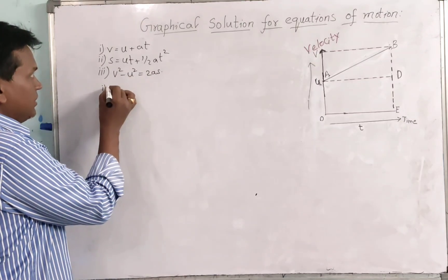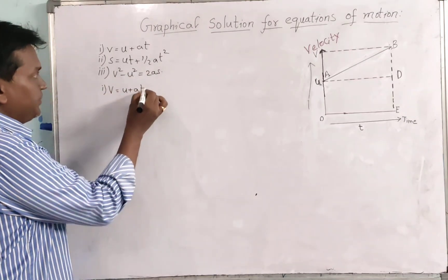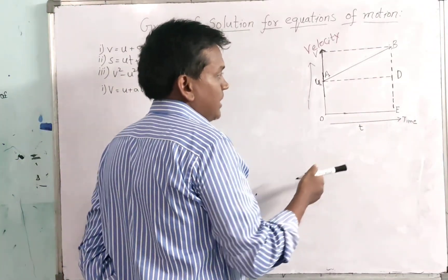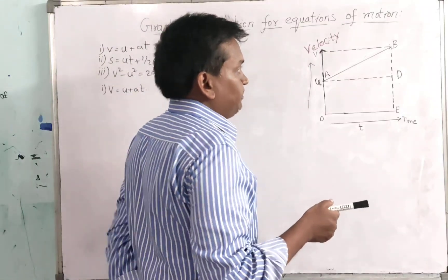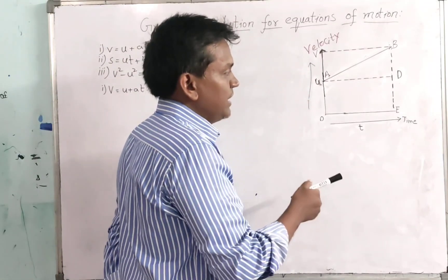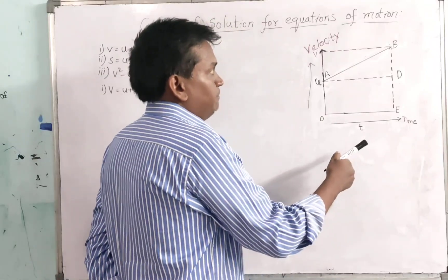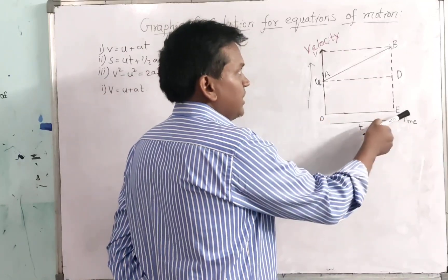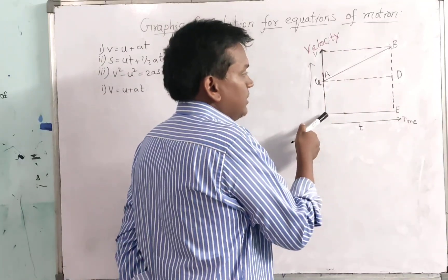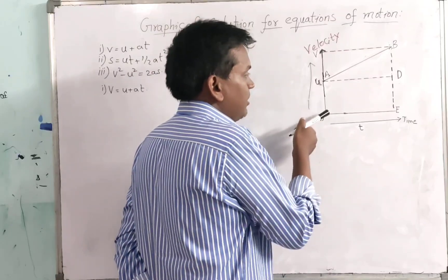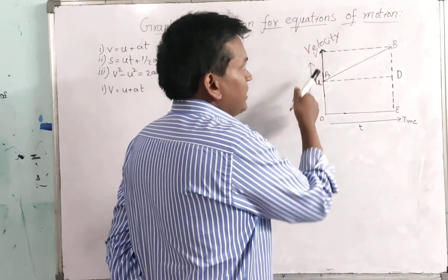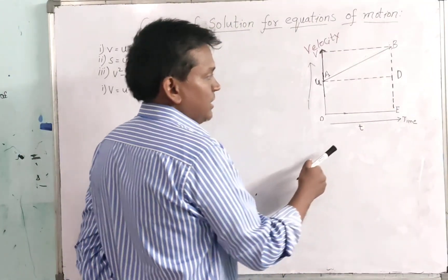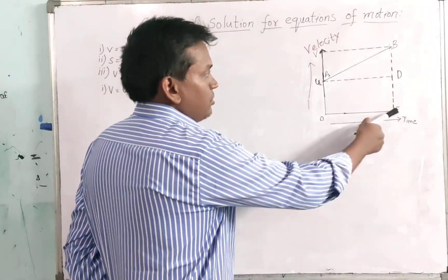For the first equation V = U + AT, here is the velocity-time graph. The X-axis is time and Y-axis is velocity. U is the initial velocity and V is the final velocity. O to E is the time. D to E represents initial velocity and E to B represents the final velocity.